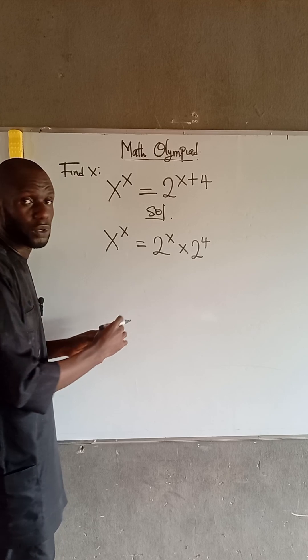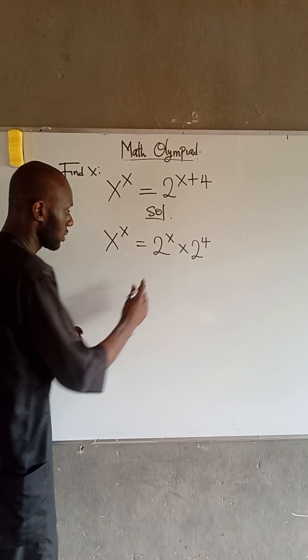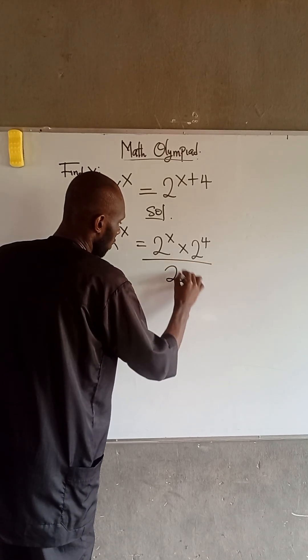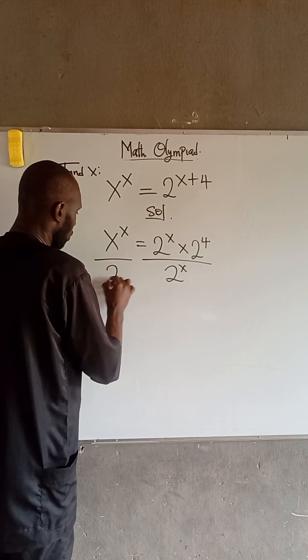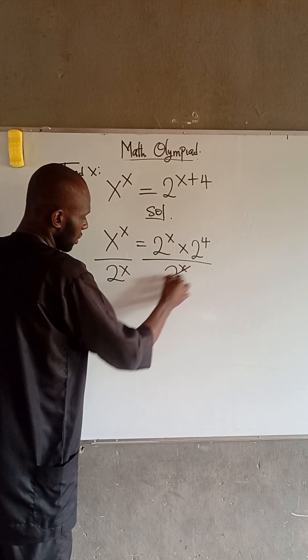Now, at this point, we can divide both sides by 2 to the power of x. So, we divide here by 2 to the power of x. And here by 2 to the power of x. So, this can cancel out.